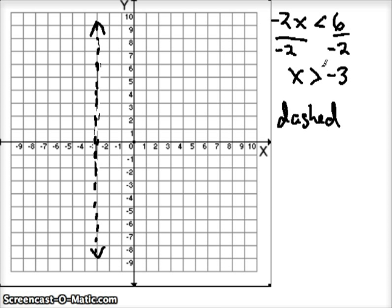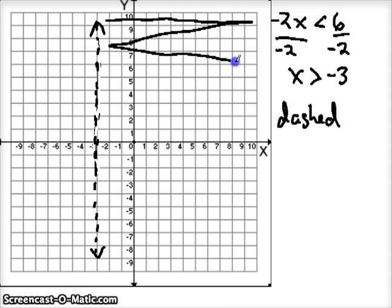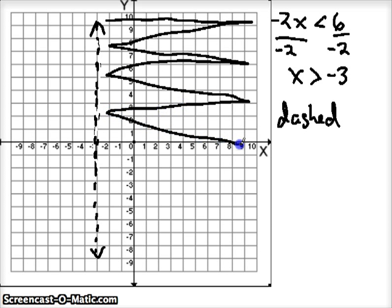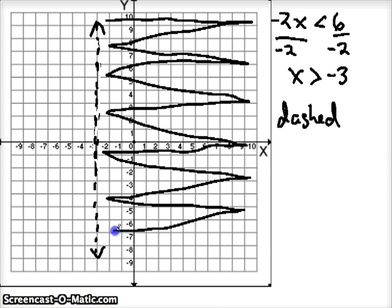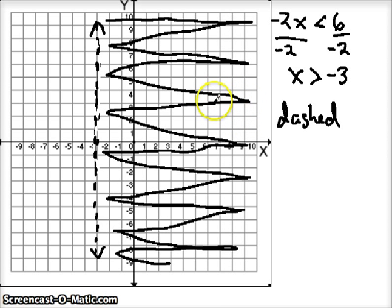Now we know where our line is. Let's talk about solutions to this inequality. We're talking about any value that's greater than negative 3. Any x value greater than negative 3 would be to the right, so we're going to shade this entire region because anything in this region is a true solution. A good way to test that is to use a test solution — pick anything in the shaded region. I'll use 3: is 3 greater than negative 3? Yes, true. 10 is greater than negative 3, also true.